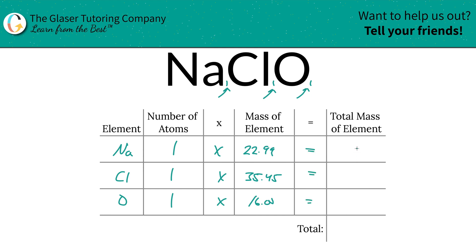Then you're going to multiply the rows across to find the total mass of the element. So we're going to multiply this. The total mass of sodium here is going to be 22.99. Total mass of chlorine is going to be 35.45. Total mass of oxygen is going to be 16.